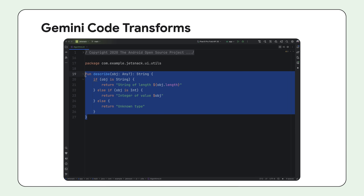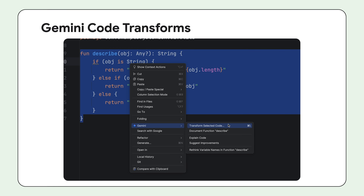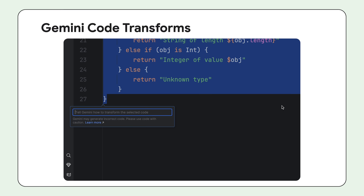Imagine having an AI-powered coding companion right at your fingertips. With Gemini Code Transforms, that's a reality. Simply right-click on your code or use the keyboard shortcut to bring up the Gemini prompt. Describe the changes you want to make and Gemini will suggest code improvements. Whether you need to simplify complex code, optimize performance, or even generate entirely new functions, Gemini has you covered.